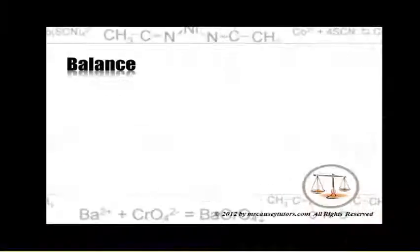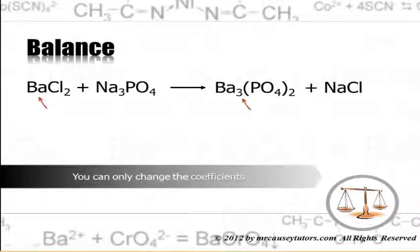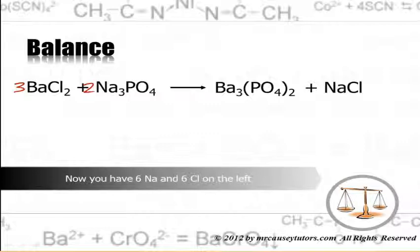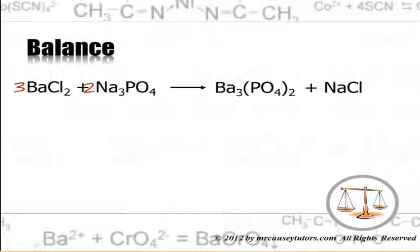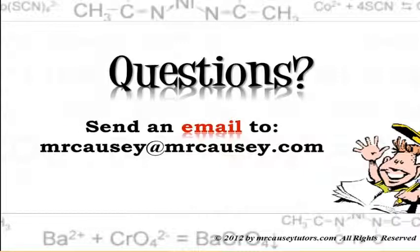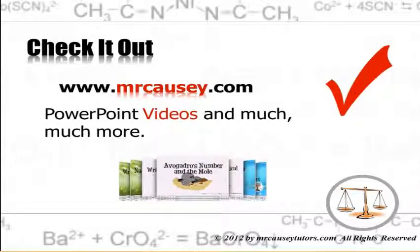Practice: balance the equation for barium phosphate. Note there are three barium atoms on one side but only one on the other. Adjusting coefficients: there are two phosphates on the right but only one on the left, so put a 2 in front of the sodium phosphate. That gives 6 chlorines and 6 sodiums, so put a 6 in front of sodium chloride. Final check: three bariums on each side, two phosphates on each side, 6 chlorine and 6 sodium on each side — balanced.